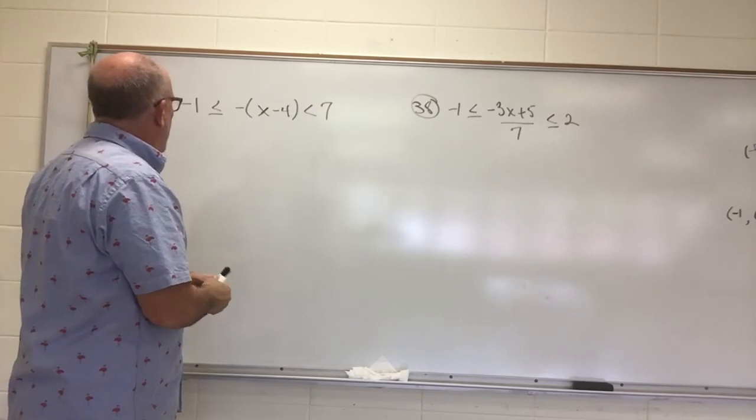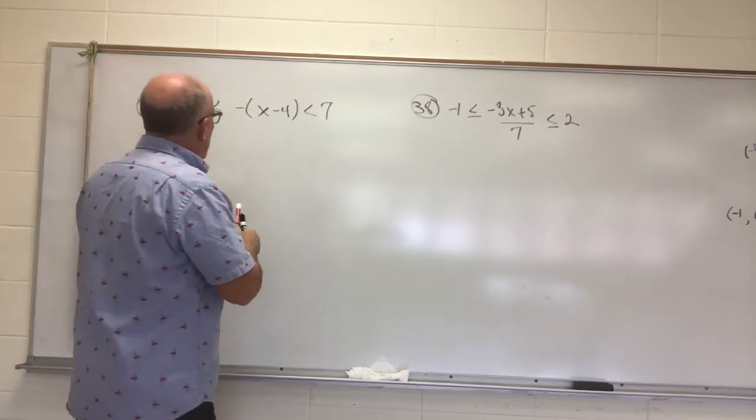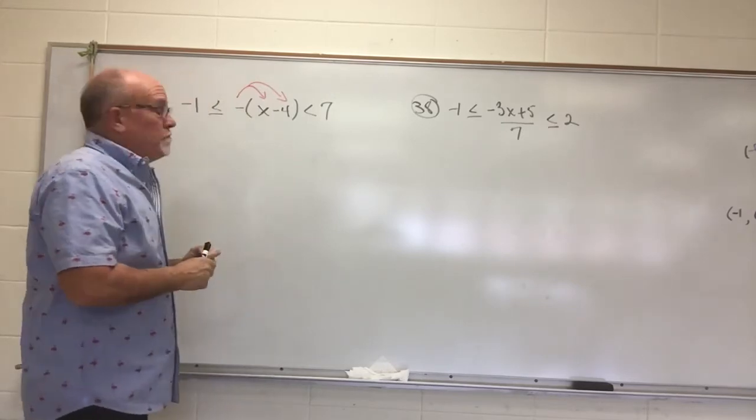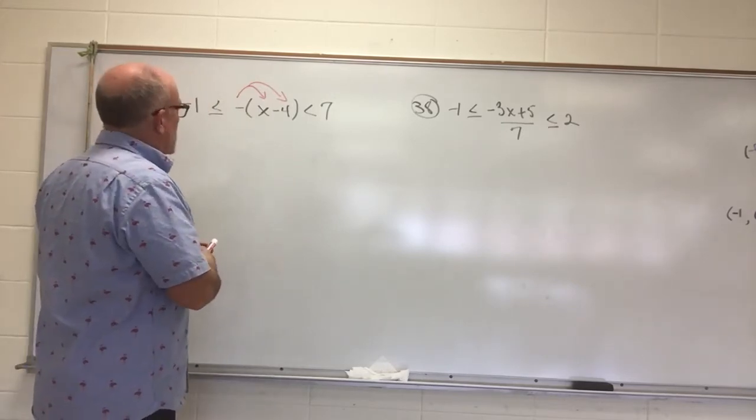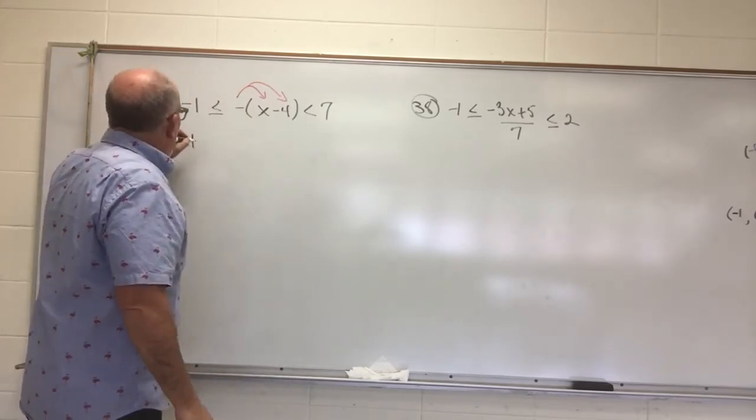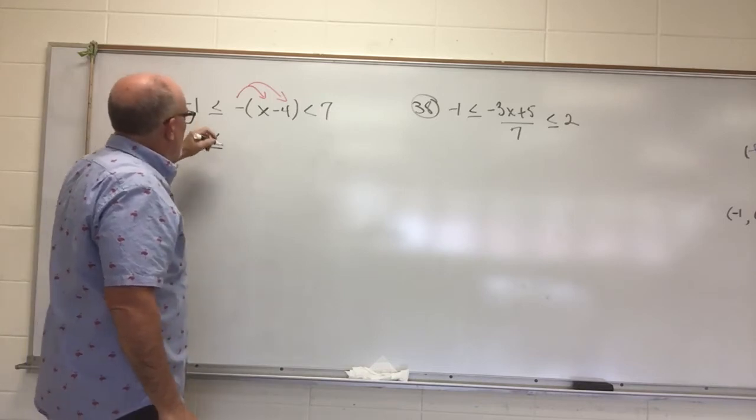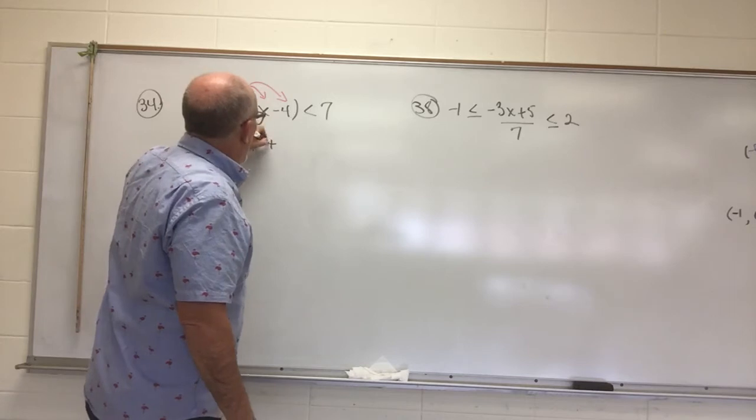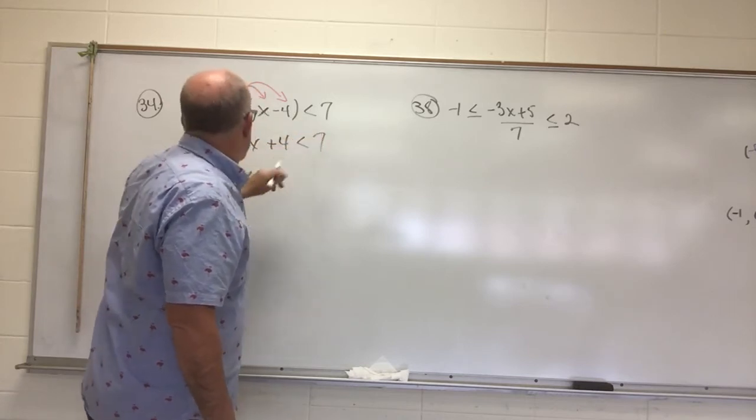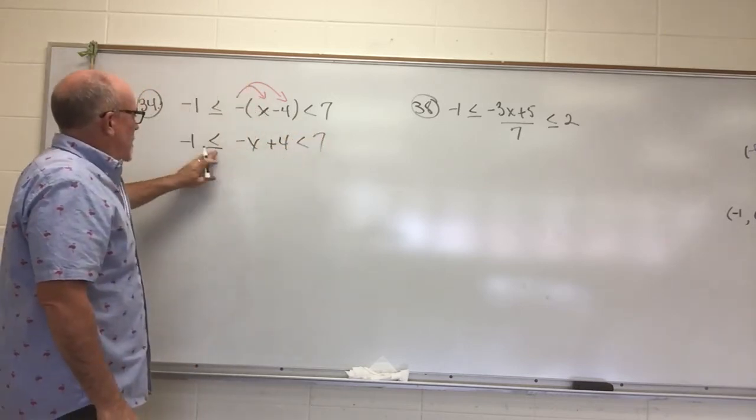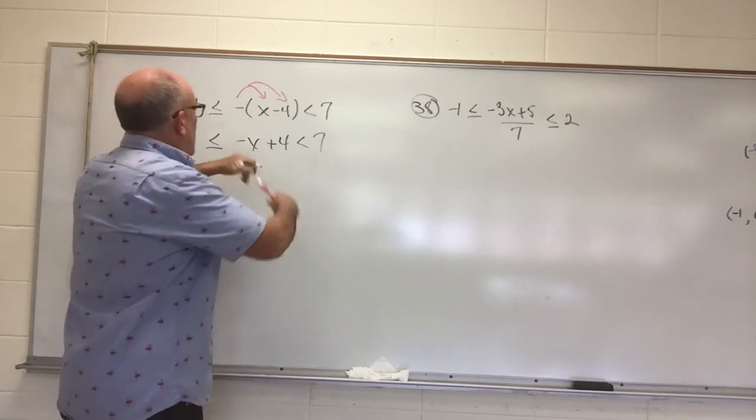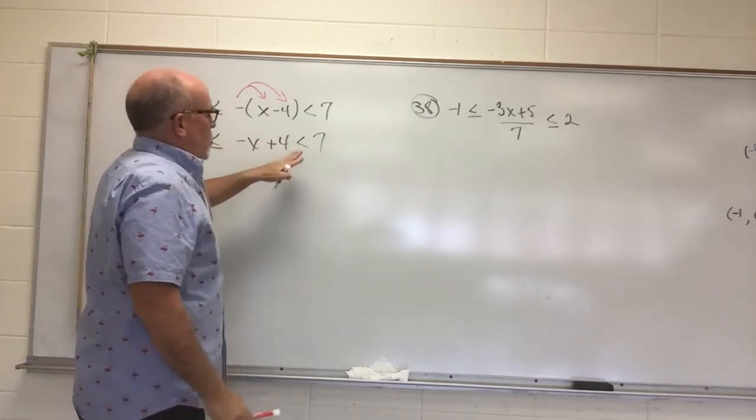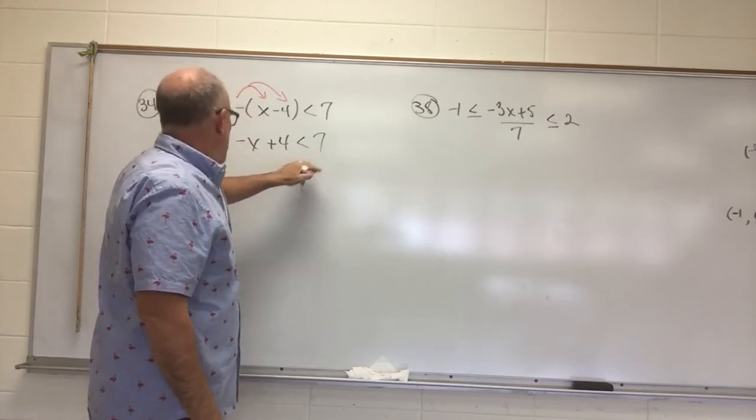All right, let's distribute. It could be easiest to distribute the negative sign. So a great start, right? A negative 1 less than or equal to, we're doing a negative x. That's going to make it positive 4 less than 7. So negative 1 is less than or equal to the quantity, negative x plus 4, which is less than 7.